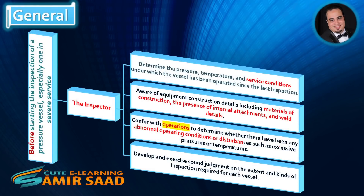Before starting the inspection of a pressure vessel, especially one in severe service, the inspector should determine the pressure, temperature, and service conditions under which the vessel has been operated since the last inspection. The inspector should also be aware of equipment construction details, including materials of construction, the presence of internal attachments, and weld details.